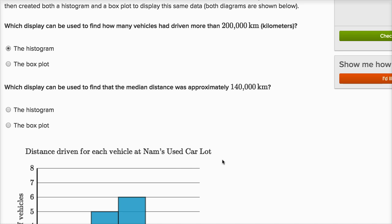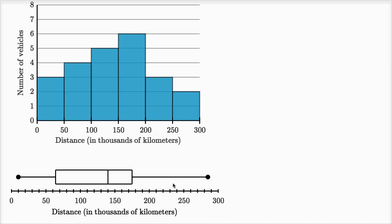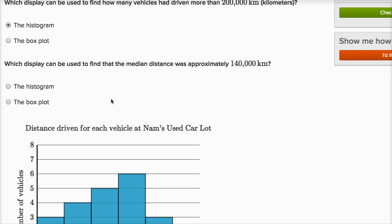But let's verify that the box plot isn't so useful. So I want to know how many vehicles had a mileage more than 200,000. Well, I know that if I have a mileage more than 200,000, I'm going to be in the fourth quartile. But I don't know how many values I have sitting there in the fourth quartile, just looking at this data over here. So that's not going to be useful for answering that question. Let's look at the second question.